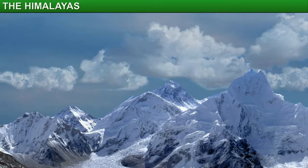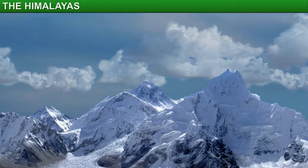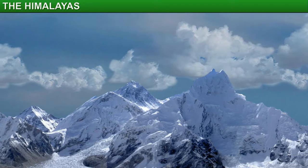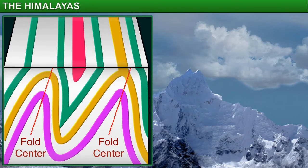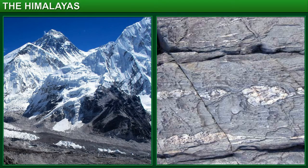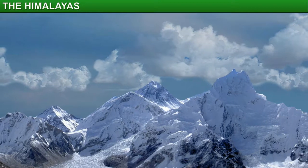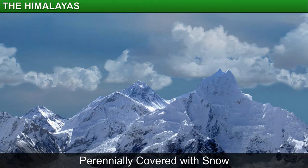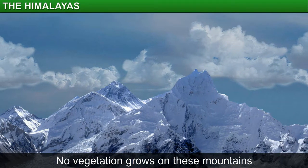As mentioned earlier, the Himalayas are fold mountains. However, the Great Himalayan folds are not completely symmetrical. This is why the peaks dip slightly away from the center. The core of the Himalayan range is composed of granite. The lofty heights of the mountains of the Great Himalayan range mean that the peaks are snow-clad all the year round. As a result, no vegetation grows on these mountains.